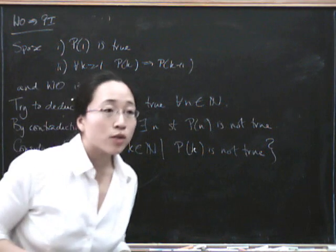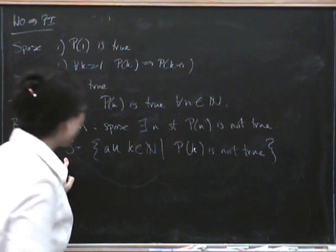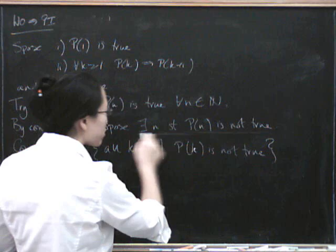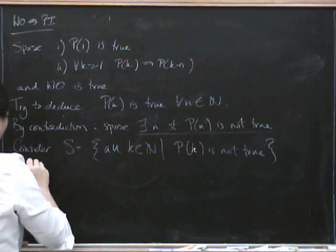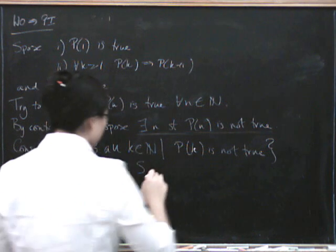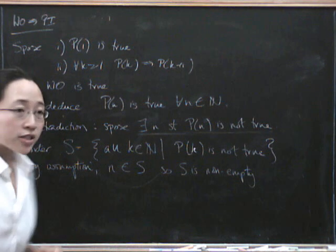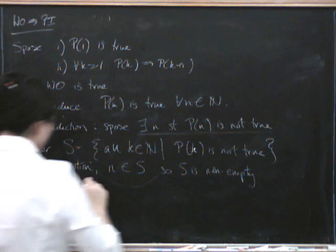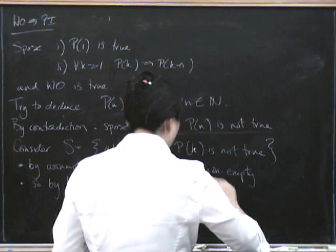We want to apply the well-ordering principle, which says that every non-empty set of natural numbers has a least element. Is S a non-empty set of natural numbers? Well, by our assumption, there exists some n such that p of n is not true, so this n is in our set S — so S is definitely non-empty. By the well-ordering axiom, S has a least element. Let's call it capital N.